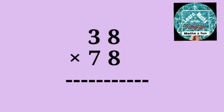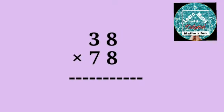Let's multiply 38 by 78. Here the sum of tens digits is 10, that is 3 plus 7 equals 10.